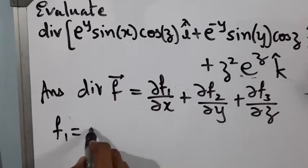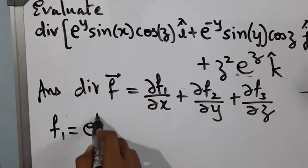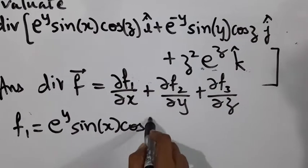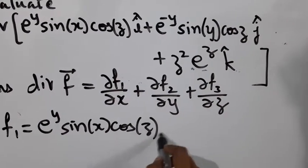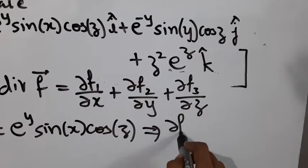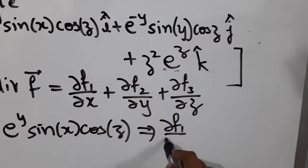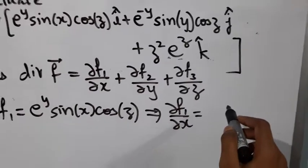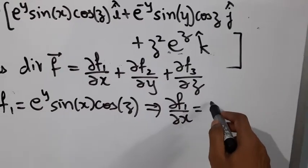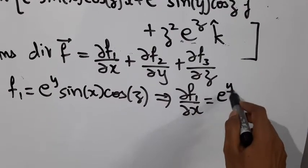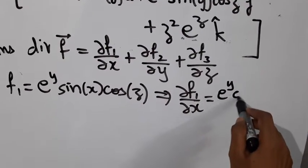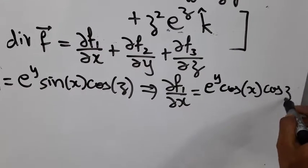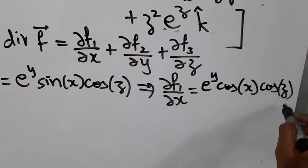f1 is e power y sin x cos z, so dou f1 by dou x is e power y cos x cos z.